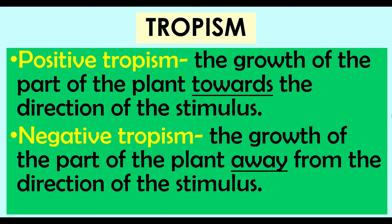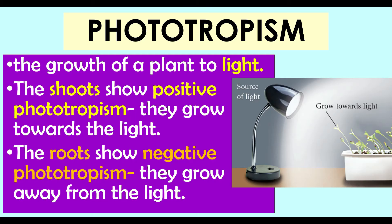By tropism, a part of a plant grows in a certain direction as a response to the stimulus. Tropisms occur slowly and are usually unnoticeable. When a part of a plant grows towards the stimulus, the response is called positive tropism. When it grows away from the stimulus, it is called negative tropism. Tropisms are named according to the stimulus involved.